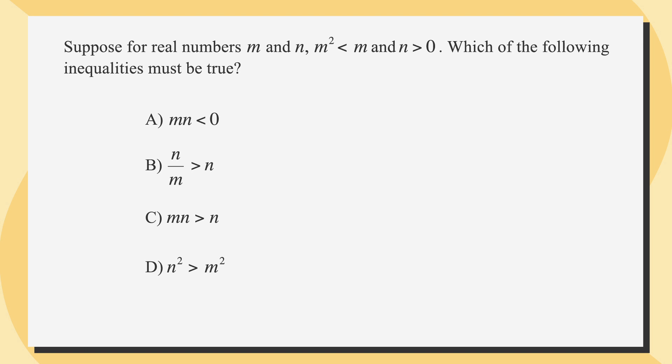Here's an example of a must-be-true math problem. When you see these words, take this to mean always true, not just sometimes true. Another way to put this is that instead of trying to prove one thing true, you're actually trying to prove that three of the answer choices are false.